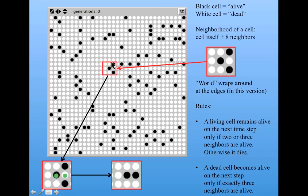So, let's test your understanding of this with a short quiz. This quiz has three questions. In each question, you get a 5x5 Game of Life grid. Assume that the grid wraps around at the edges if you need to. The question is, what is the state of the center cell, indicated by the red arrow, at the next time step? So, try that out and then watch the answer video after you're done.